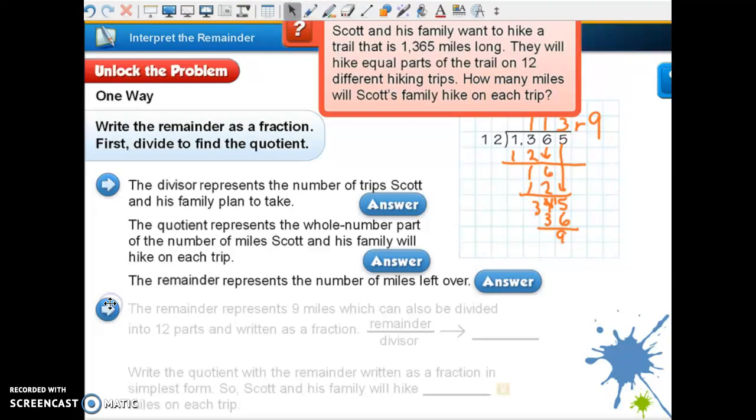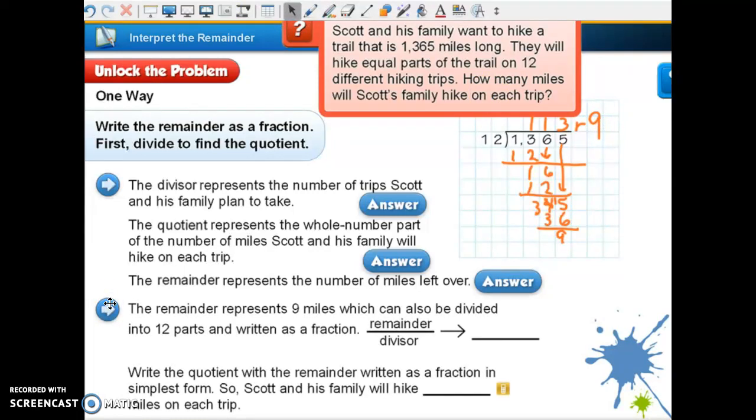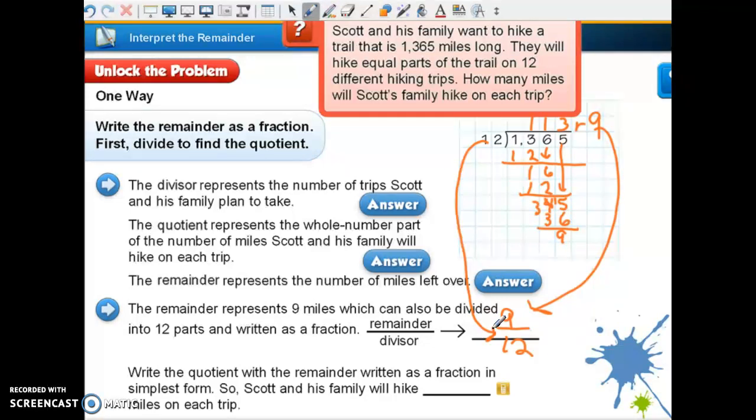Now we're going to go over here and talk about this remainder. The remainder represents 9 miles, which can also be divided into 12 parts and written as a fraction. Notice they said they put the remainder over the divisor. So the remainder over the divisor to make our fraction says write the quotient with the remainder written as a fraction in simplest form.